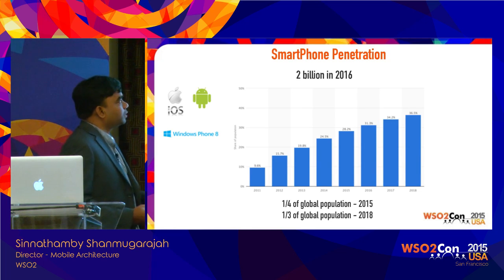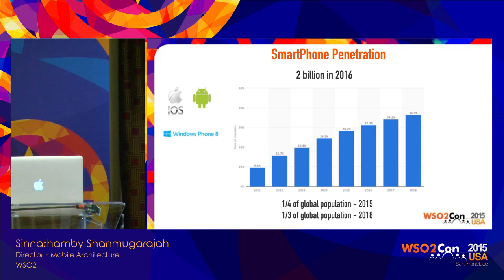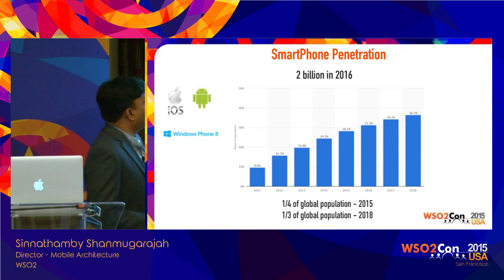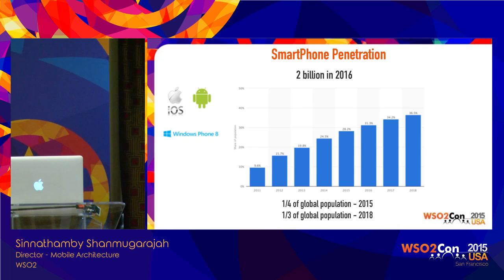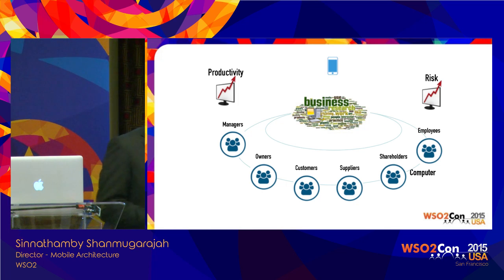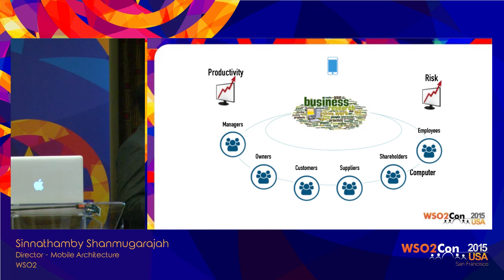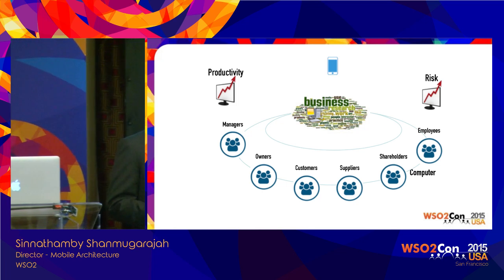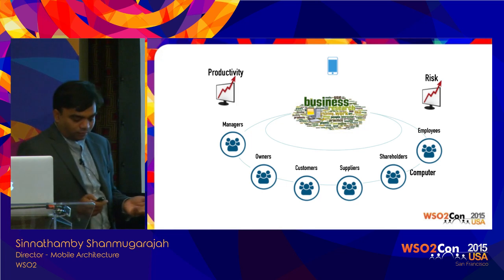Looking at enterprise mobility, smartphone penetration is around 2 billion devices in 2016 — one fourth of the global population in 2015, one third by 2018. If you look at any enterprise today, businesses have already adopted computers. Now we are adapting mobility into the business, bringing all stakeholders very close to the business because they have access to their devices. The productivity is going to increase, but at the same time, so does the risk.